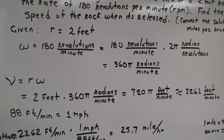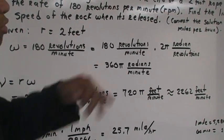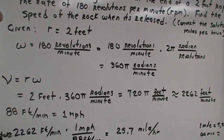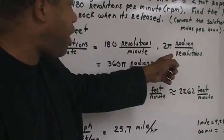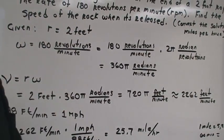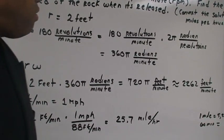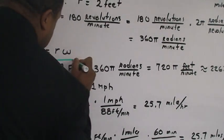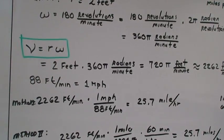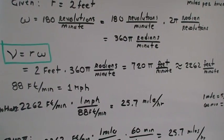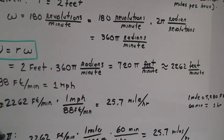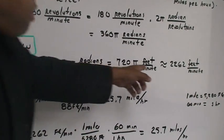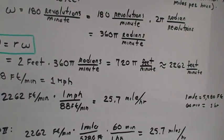And so we want to convert that to radians per minute. So remember from the previous example, 180 revolutions per minute, now we multiply that by what? 2 pi radians per revolution, which will give us 360 pi radians per minute. Now we'll plug this value, or these values into the formula, v is equal to r times omega. So the radius is 2 feet times 360 pi radians per minute, and it's equal to 720 pi feet per minute. So this is approximately 2,262 feet per minute.